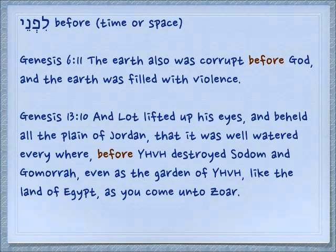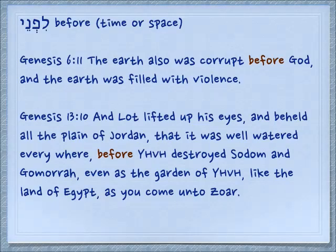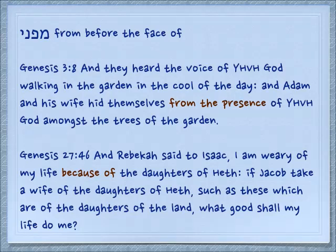So from this concept of panim — face — we have a preposition, lifne, which gives us the idea of 'in the face of.' It can be before in time or before in space. Genesis 6.11: 'The earth also was corrupt before God, and the earth was filled with violence' — in God's face, for him, in front of him. Genesis 13.10: 'And Lot lifted up his eyes and beheld all the plain of the Jordan, that it was well watered everywhere, before Yehovah destroyed Sodom and Gomorrah.' This is before he did something in time. The panim can also be attached to the preposition mem, which means 'from' — mipne, from before the face of. Genesis 3.8: 'And they heard the voice of Yehovah God walking in the garden in the cool of the day, and Adam and his wife hid themselves from the presence of Yehovah God amongst the trees of the garden' — from before his face.